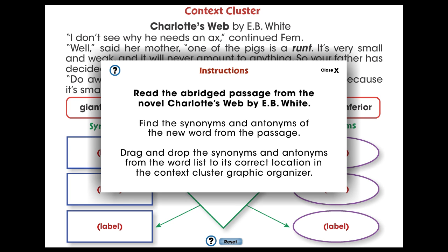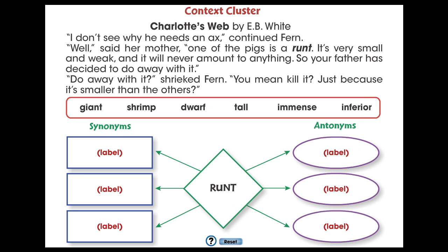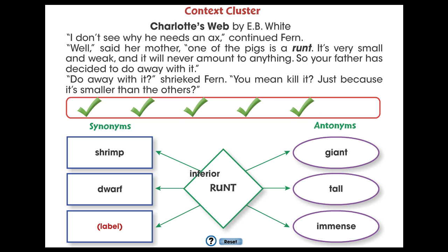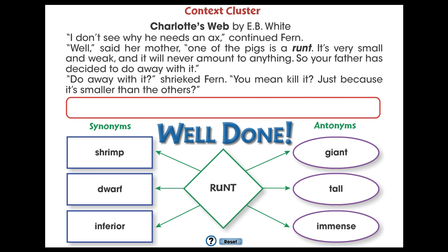In this context cluster graphic organizer, students will learn to find the meaning of a new word from the provided reading passage on Charlotte's Web by finding its synonyms and antonyms. Students drag the synonyms and antonyms from the word list to its correct position on the context cluster graphic organizer. The synonyms and antonyms will help students comprehend the meaning of the new word.